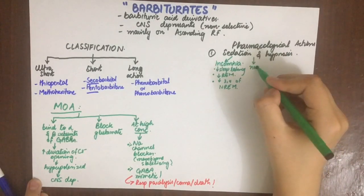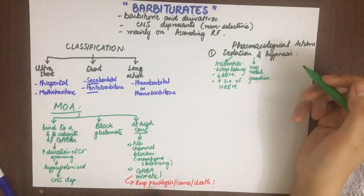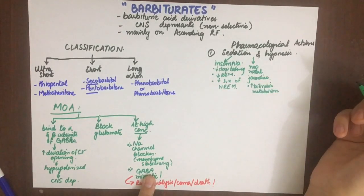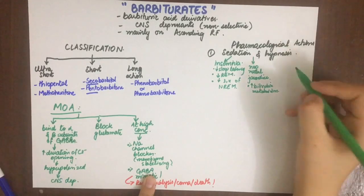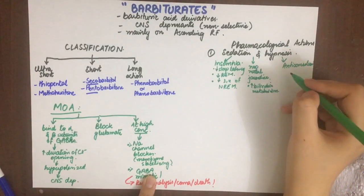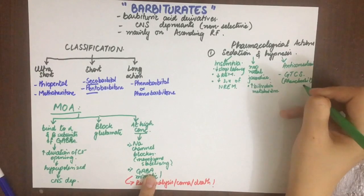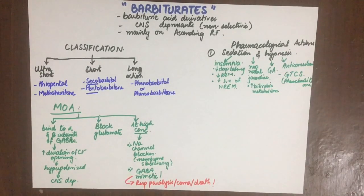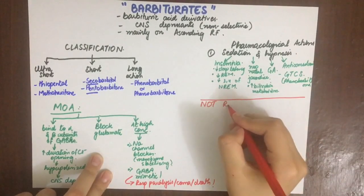They cause marked alteration of sleep architecture. Phenobarbitone can also be used in neonatal jaundice of the non-hemolytic type, where it induces the glucuronyl transferase enzyme and increases the metabolism of bilirubin. It also has anticonvulsant effects — phenobarbitone is mainly used in status epilepticus, generalized tonic-clonic seizures, and epilepsy. It also has general anesthetic effects by its membrane-stabilizing effect.